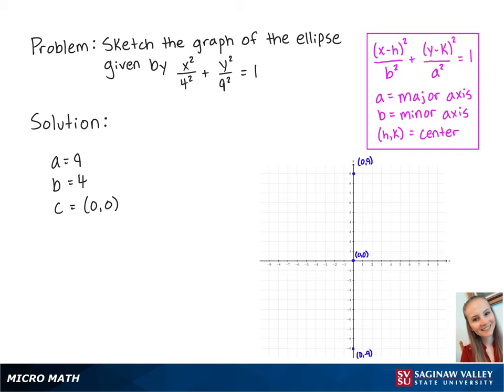The minor axis points will be 4 to the left and 4 to the right of the center. So the first point will be at negative 4, 0, and the second at 4, 0.